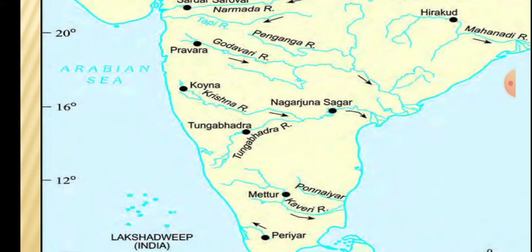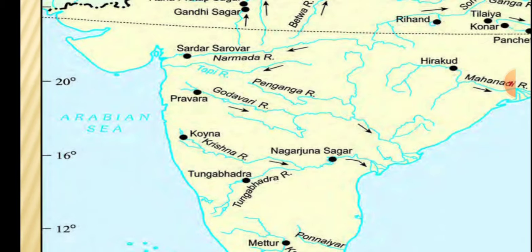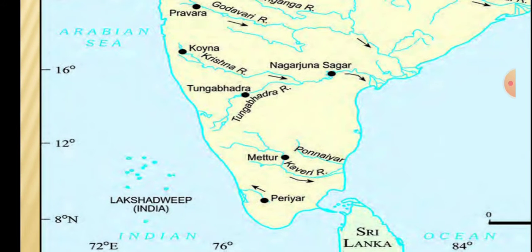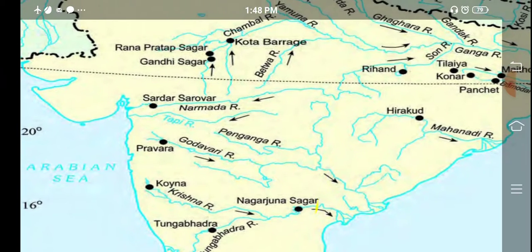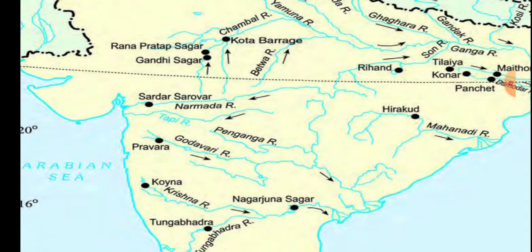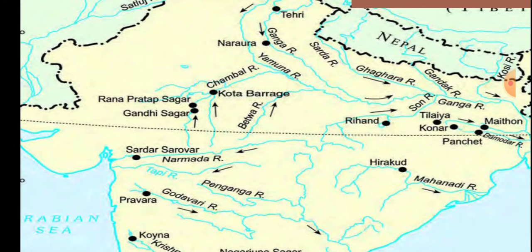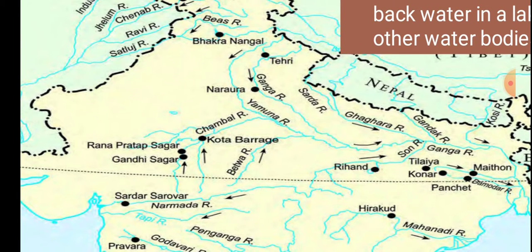Nagarjun Sagar Dam is on the Krishna River. Tungabhadra River has Tungabhadra Dam. Koina Dam is on the Krishna River. Kaveri River has Mettur Dam. Periyar Dam is also shown. Pravara Dam is on Godavari River. Sardar Sarovar Dam is on Narmada River. Gandhi Sagar Dam, Rana Pratap Sagar Dam, and Kota Barrage are on the Chambal or Betwa River.